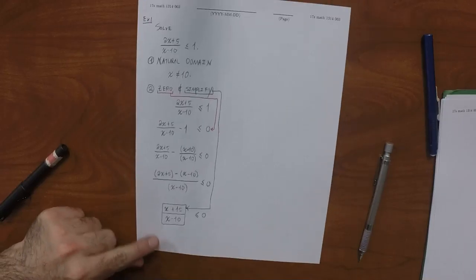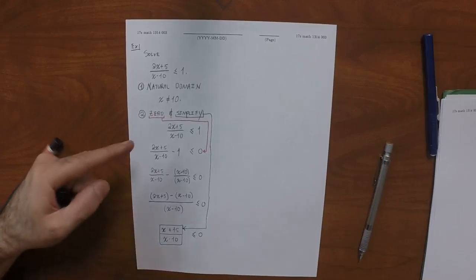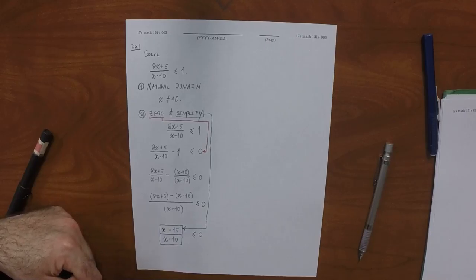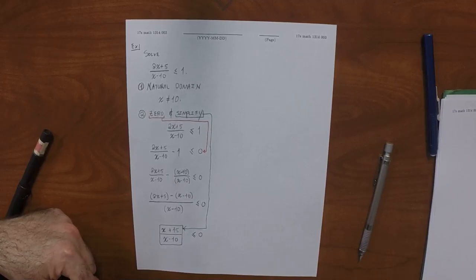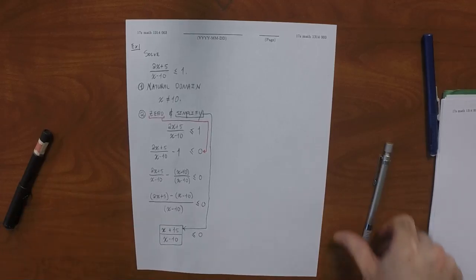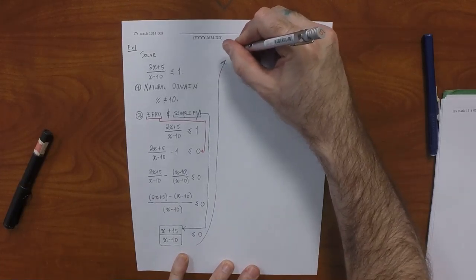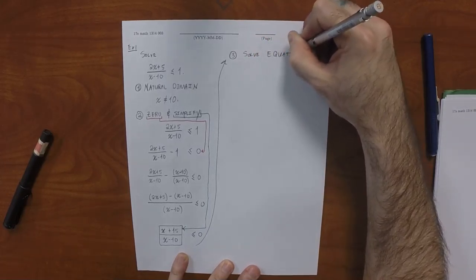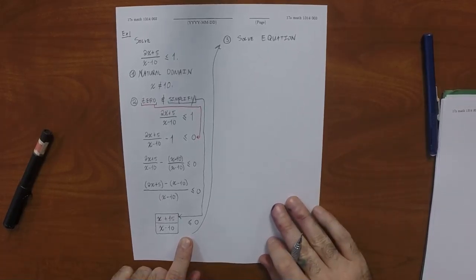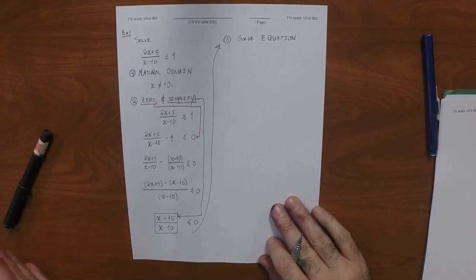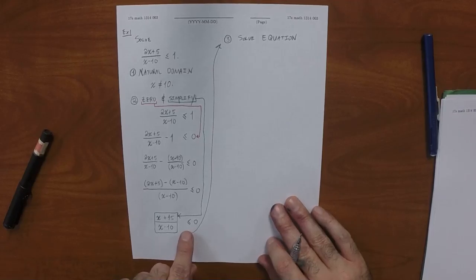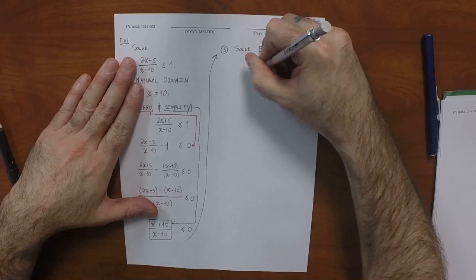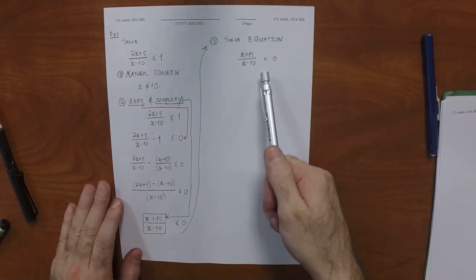Any questions about getting here? Notice how many times we multiplied both sides of an inequality by something: zero times. So it is literally impossible that we made the mistake from the previous page. Next step: solve the corresponding equation. We take the inequality and replace the inequality sign with equals: (x plus 15) over (x minus 10) equals zero. Multiply both sides by x minus 10 — and that's fine now because it's an equation, not an inequality, so there's no direction to flip. The answer is x equals negative 15.